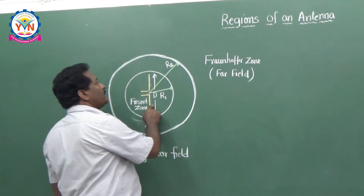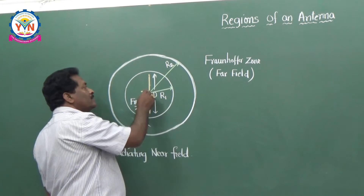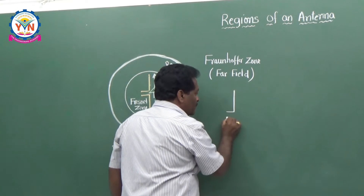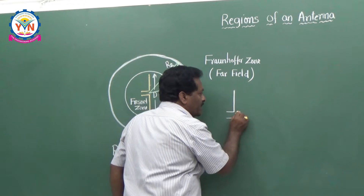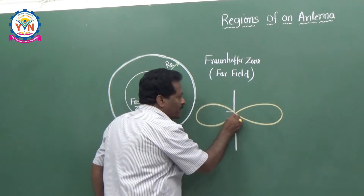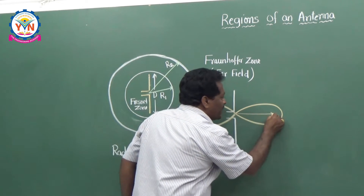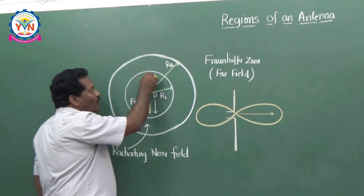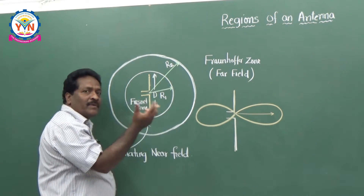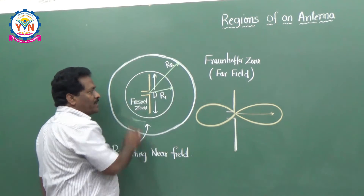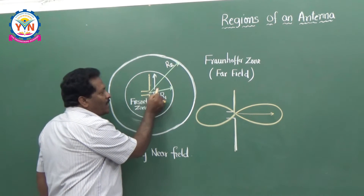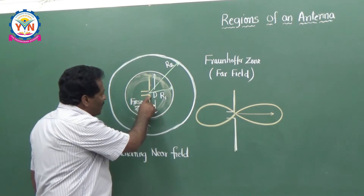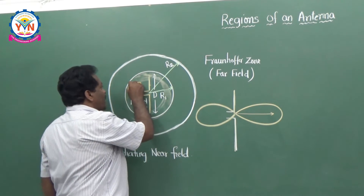Let me explain the regions of an antenna by considering a dipole. A dipole has maximum radiation at an angle of 90 degrees to its length, and minimum radiation along its length — there is no radiation along its length. If you take a dipole of maximum dimension D, it also has different regions. Up to distance R1, this entire region surrounding the antenna is called the Fresnel zone or Reactive zone.